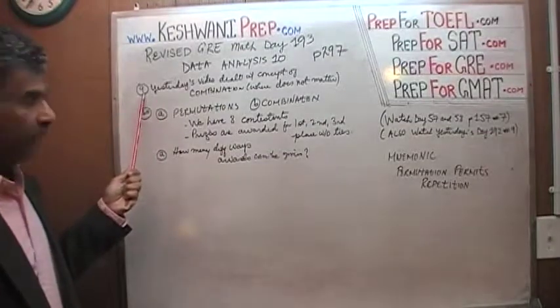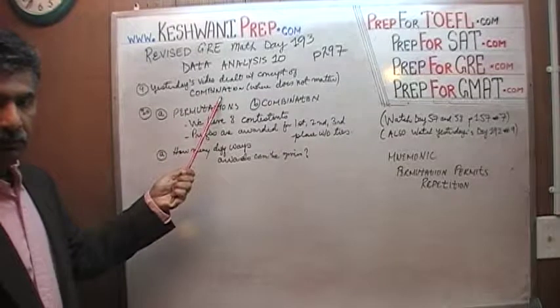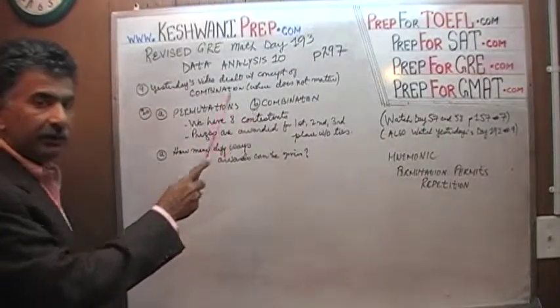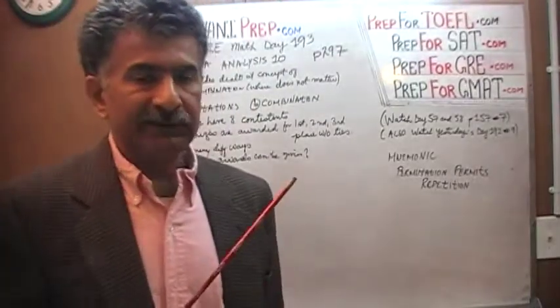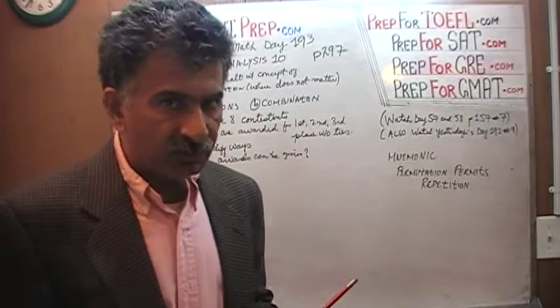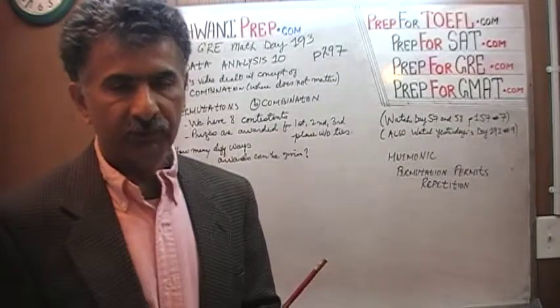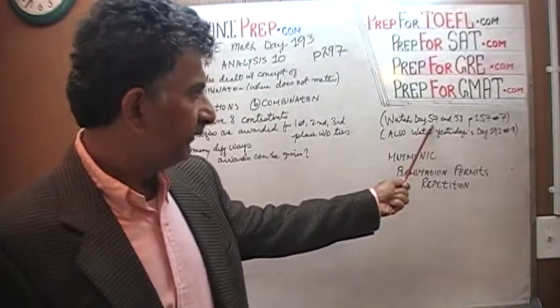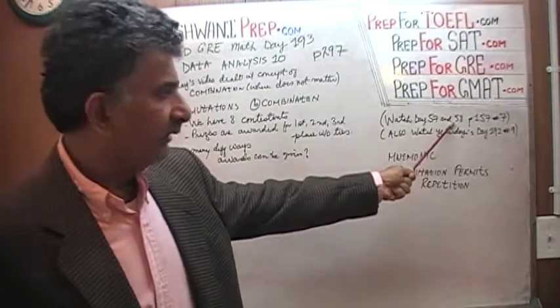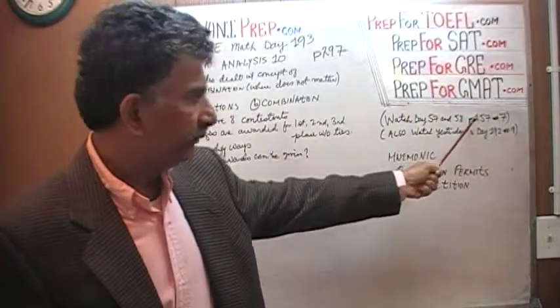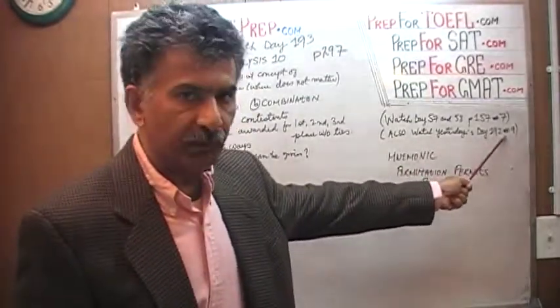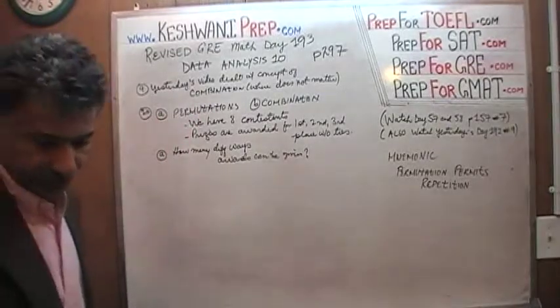Yesterday's video, problem number 9, dealt with the concept of combination. Today's problem has both parts: Part A deals with permutation and Part B deals with combination. If you're still confused about these concepts, go back and watch from day 57. I spent an hour talking about these concepts on page 157. Also watch yesterday's video, day 192, which deals with combination.